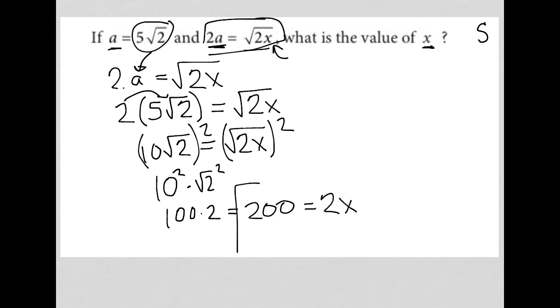So I'd have 200 = 2x. Dividing by 2 on both sides, I get x = 100. That is our final answer.